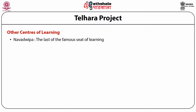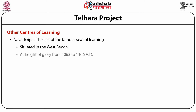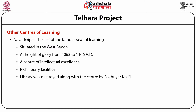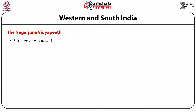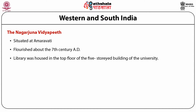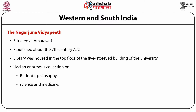Namadwipa, the last of the famous seats of learning, situated in West Bengal, was at its height of glory from 1063 to 1106 AD. It was a centre of intellectual excellence with rich library facilities. The library was destroyed along with the centre by Bakhtiar Khilji. The next was the Vallabhi University, which is famous for its Hinayana courses of studies and had a well-equipped library. The Nagarajana Vidyapit flourished about the 7th century AD and its library was housed in the top floor of the five-storey building of the university.